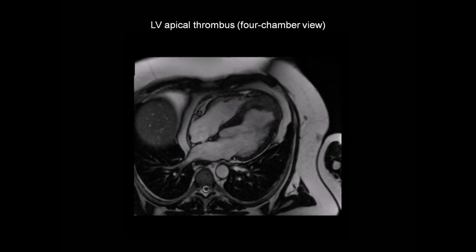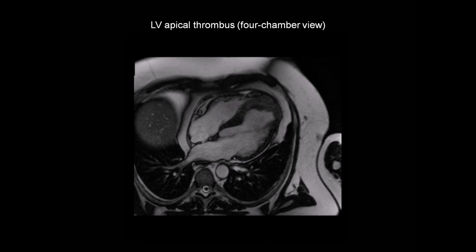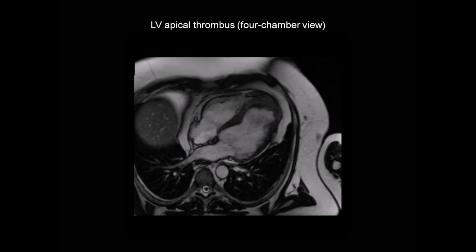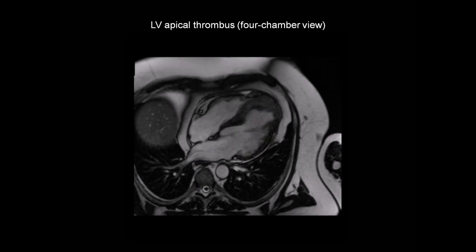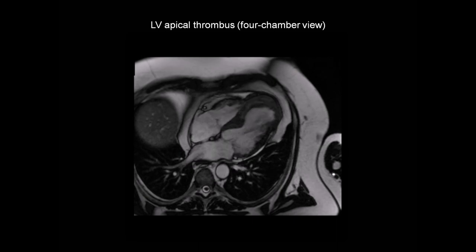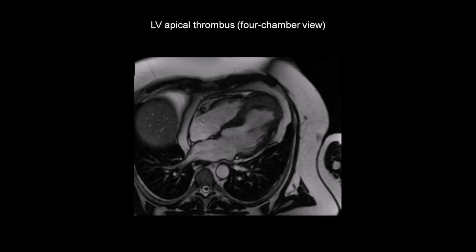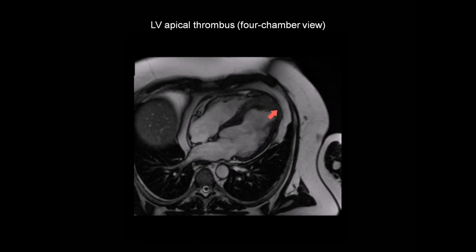This is a cine-CMR image showing a four-chamber view, from a 47-year-old man with an ischemic cardiomyopathy. He has an overall left ventricular ejection fraction of 36% as a result of a significant area of myocardial infarction affecting the left ventricular apex. This is the left ventricle, and we can see that the apex is dyskinetic.